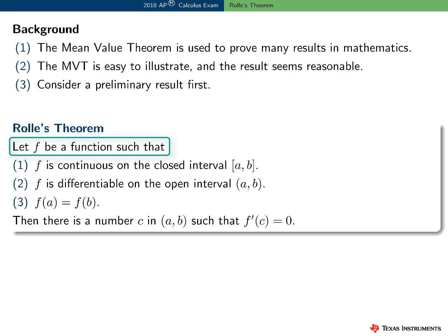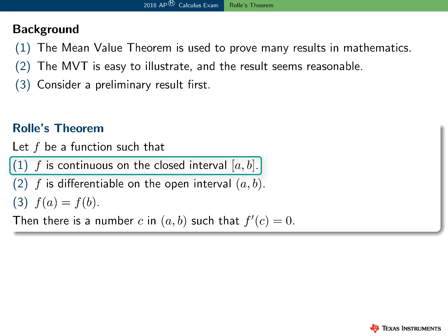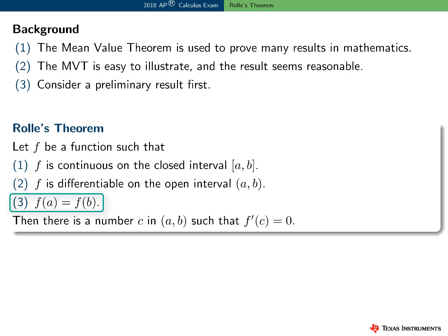Rolle's theorem says: suppose we have a function f that satisfies three conditions. f is continuous on the closed interval a to b, f is differentiable on the open interval a to b, and the values of f at the endpoints are the same — that is, f of a equals f of b. Then there exists a number c in the interval a to b such that f prime of c is equal to zero.